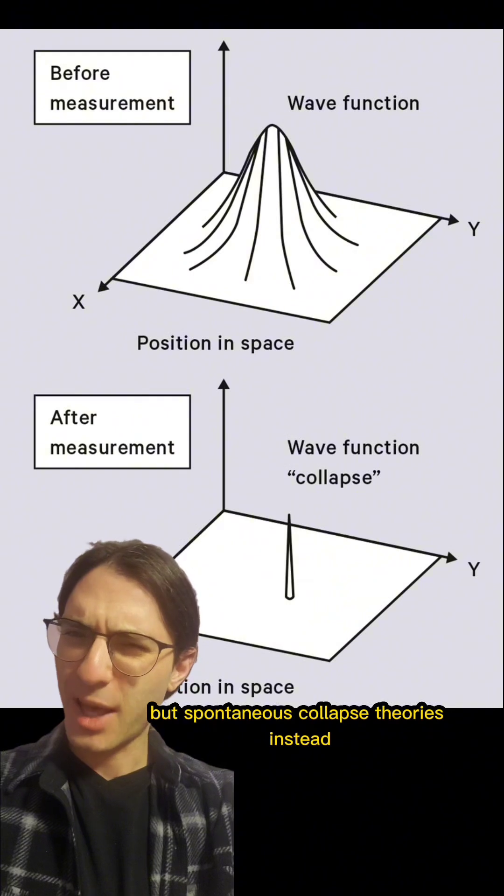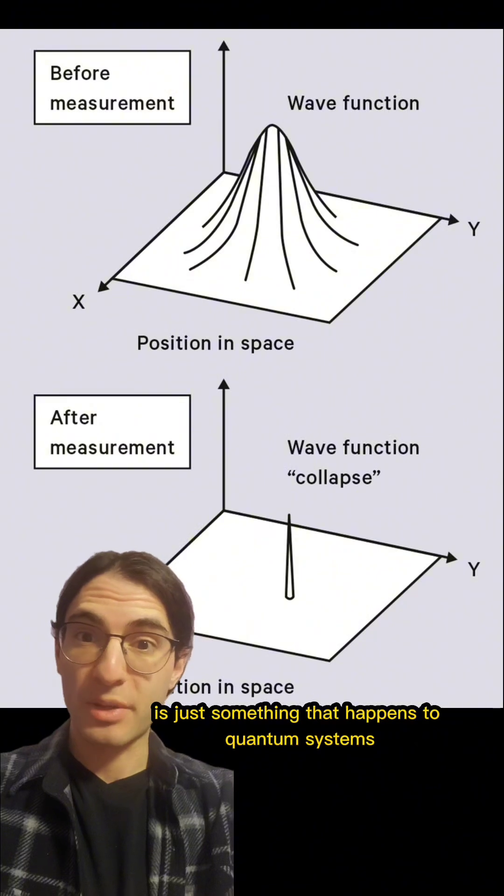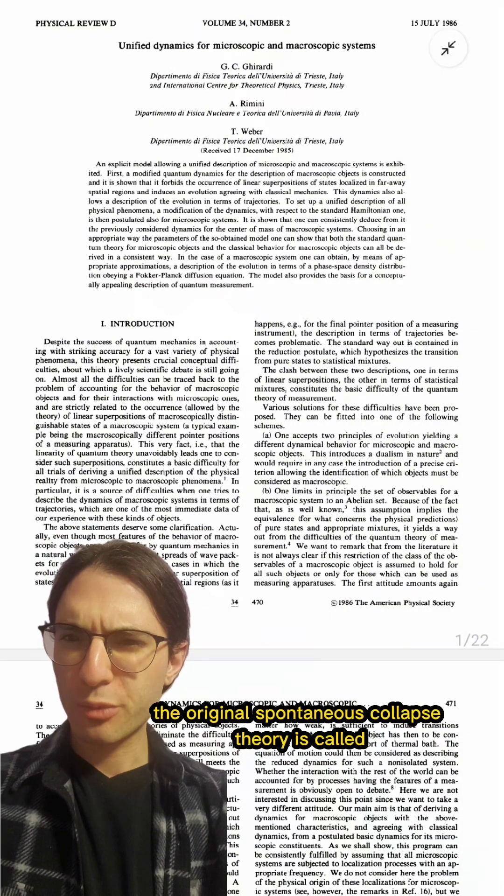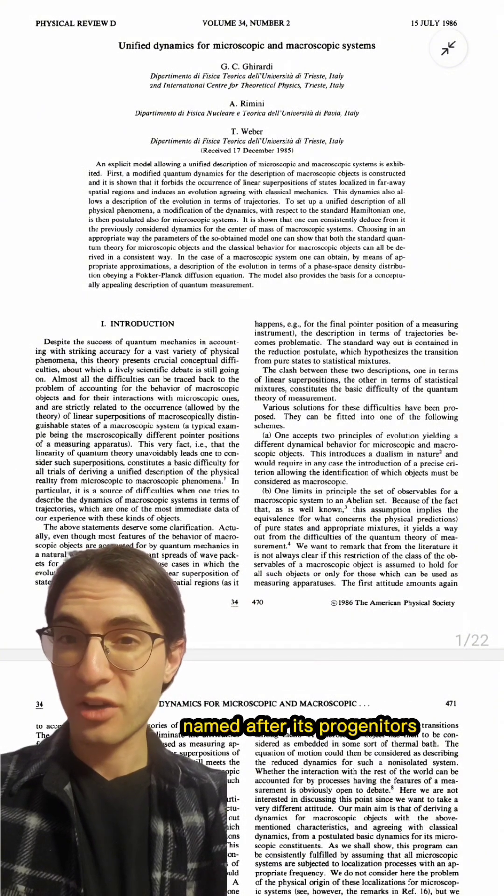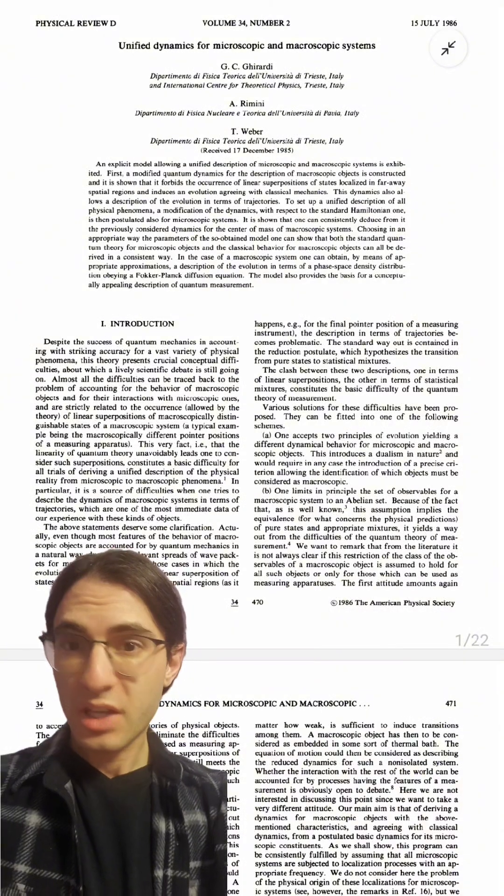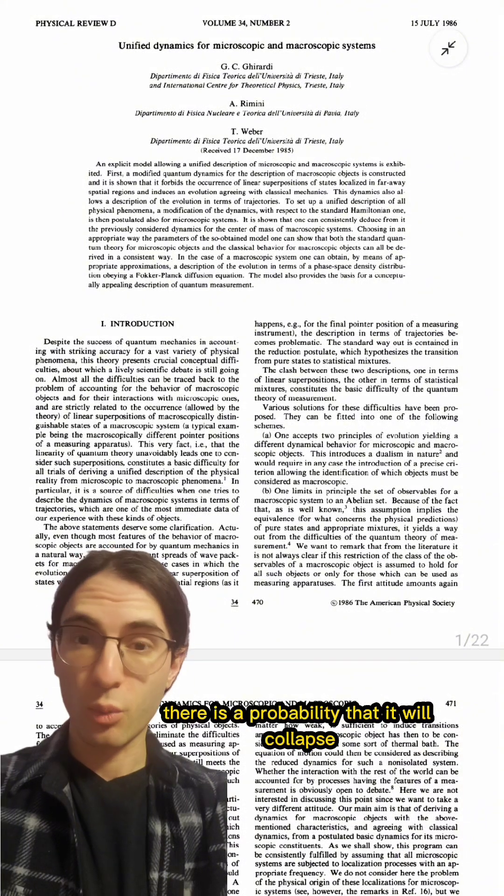But spontaneous collapse theories instead suggest that wave function collapse is just something that happens to quantum systems. The original spontaneous collapse theory is called the GRW model, named after its progenitors Girardi, Raminia, and Weber. In their model, for every particle and every moment in time, there is a probability that it will collapse.